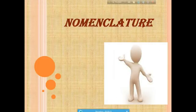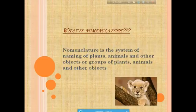Hello friends, today we discuss about nomenclature. Nomenclature is defined as the system of naming of plants, animals and other objects, or groups of plants, animals and other objects.